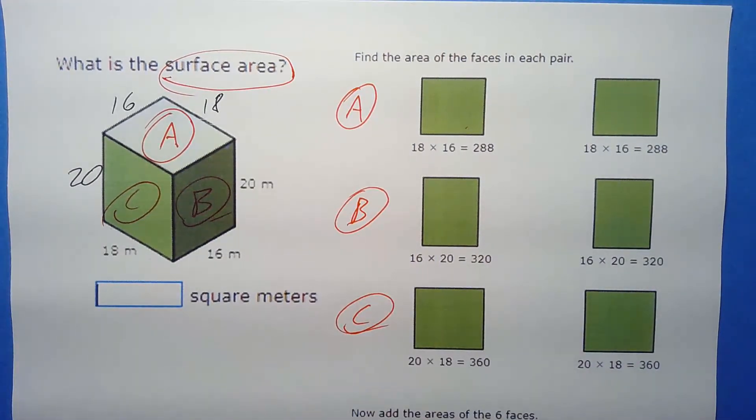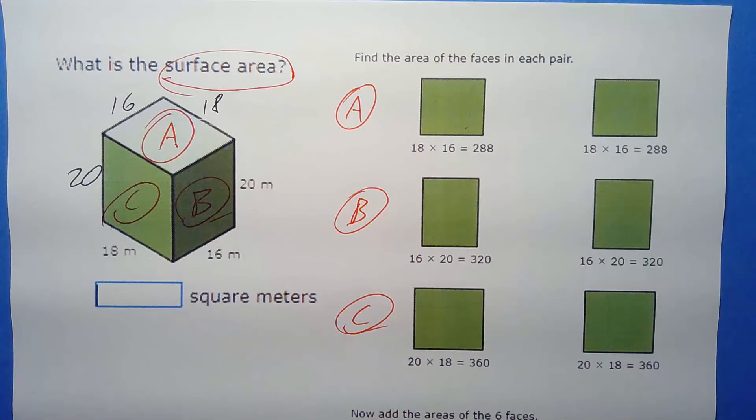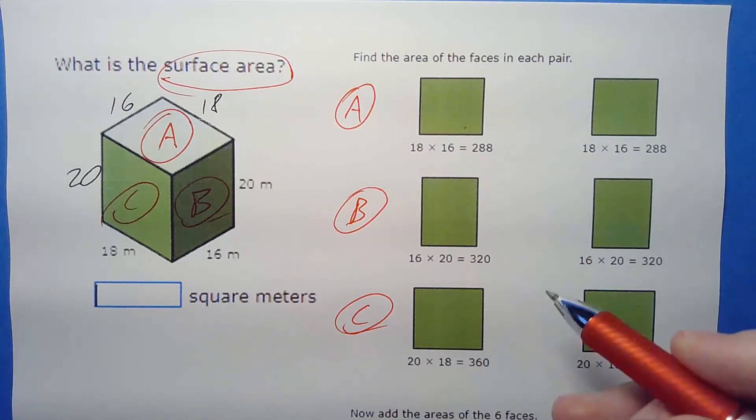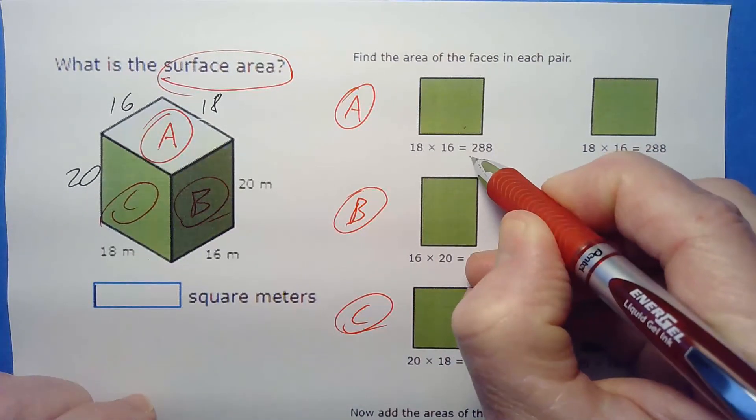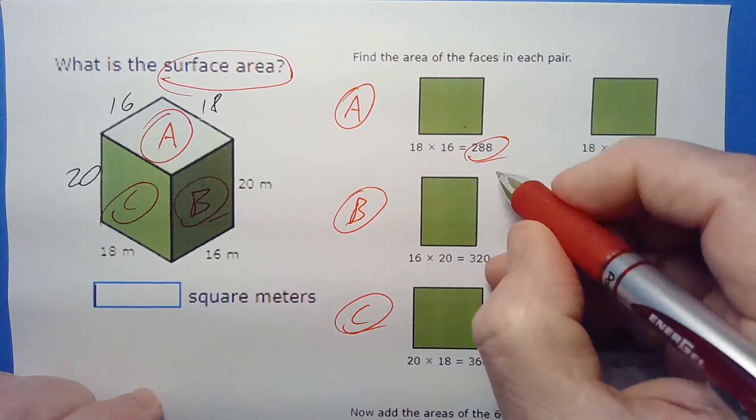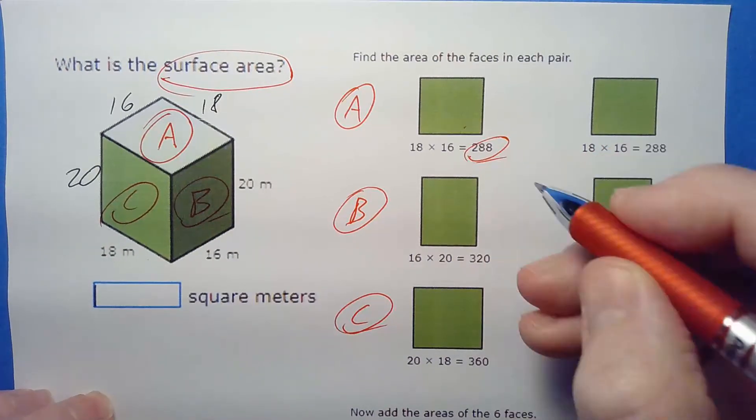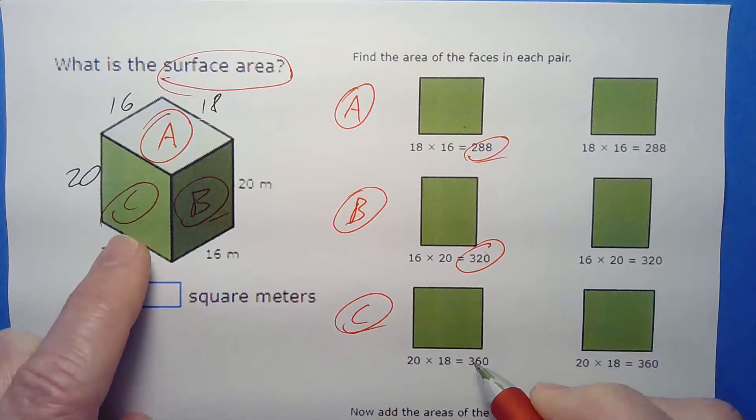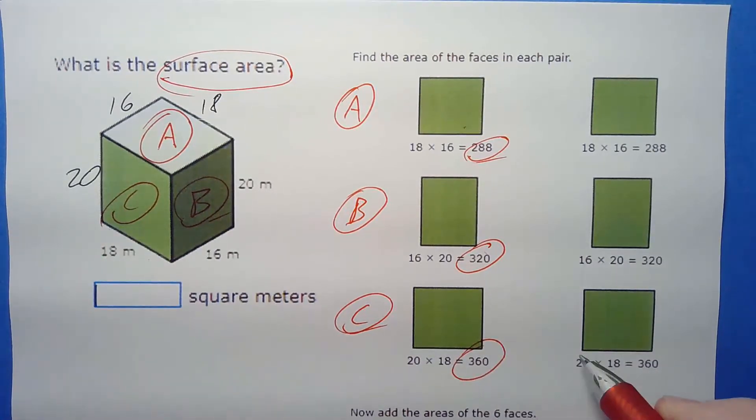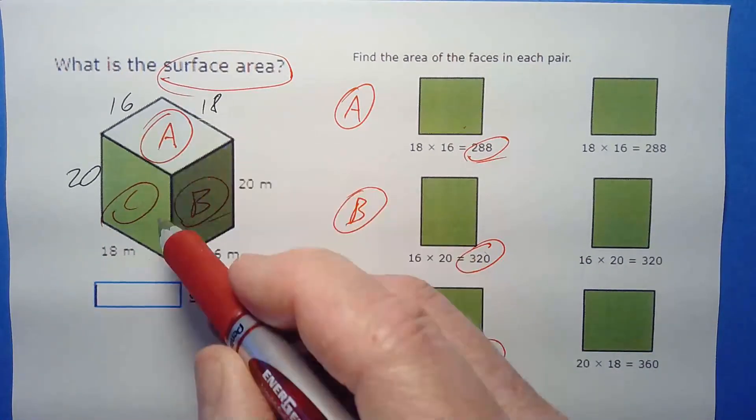So this is B. And then finally, that leaves this guy right here, which again, I've got the 18, but look, here's 20, 20, 20, so let me put him over here as well. Sometimes it just helps to keep track of it that way. And so this would be surface C.